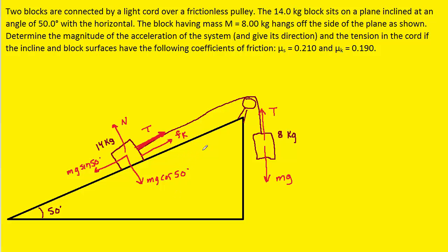Now, after drawing these free body diagrams, we have to apply Newton's second law to both situations. Let's go back to the 8 kilogram block. We can say that the tension minus gravity is equal to the mass times the acceleration of this block.